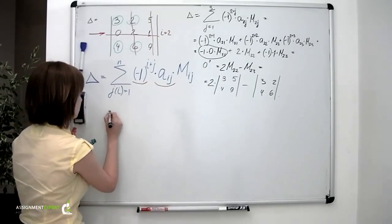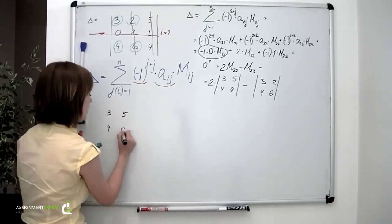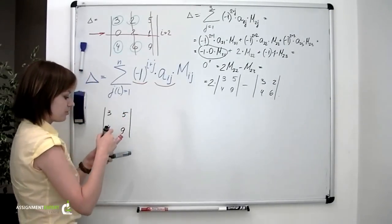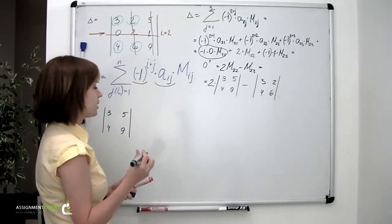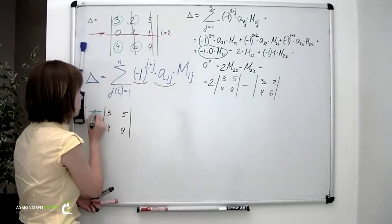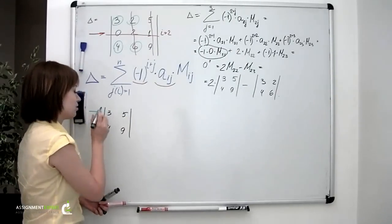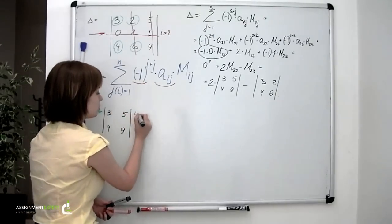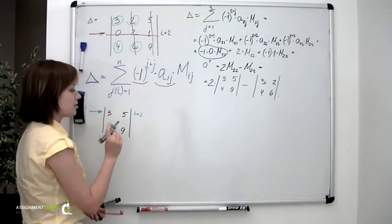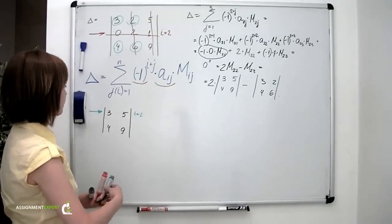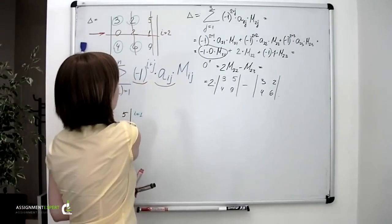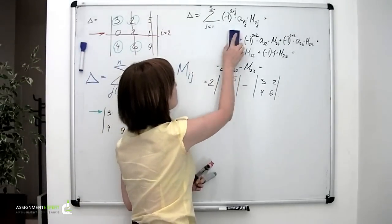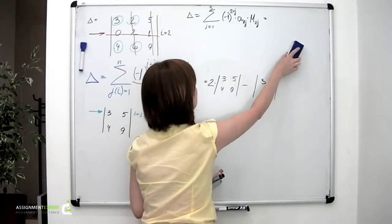So the first goes like this: 3, 5, 4, 9. Now, according to the formula, the first thing to do is to choose a row or a column. I suggest that we choose the first row, although it doesn't matter if we choose any other one. So this means that we set i to the value of 1.